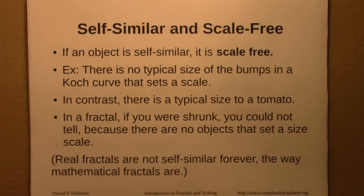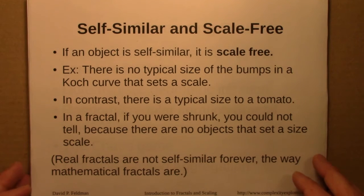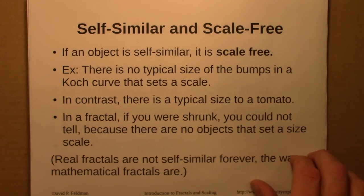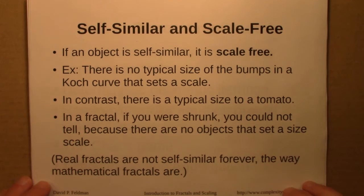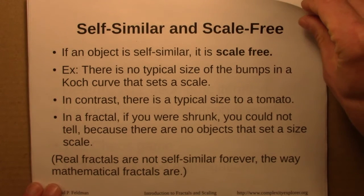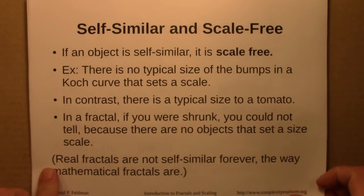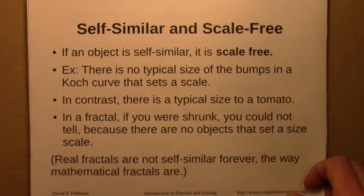Another way to think about this is that in a fractal, if you're shrunk, you wouldn't be able to tell, because there are no objects that set a size scale. You may be in a tree that consists of branches, that consists of branches, that consists of branches — branches of different sizes all the way up and down, so no single branch sets a scale. Real fractals are not self-similar forever all the way down; there's some lower cutoff scale.